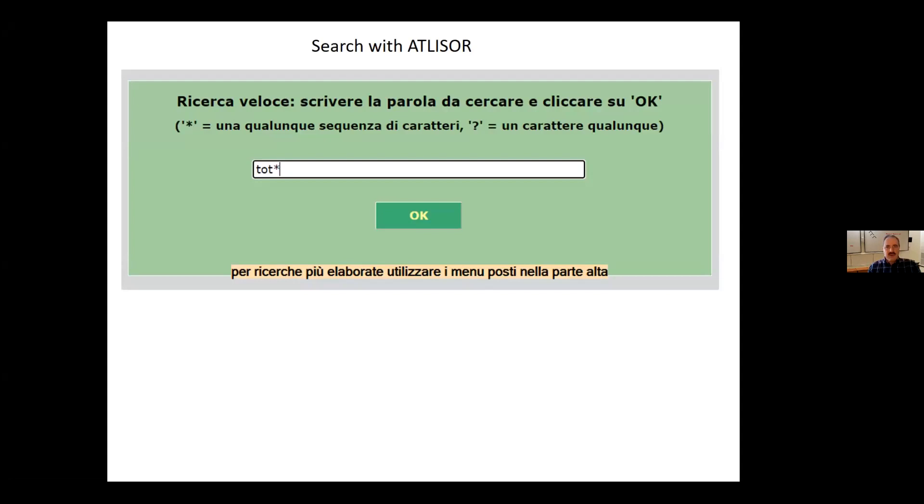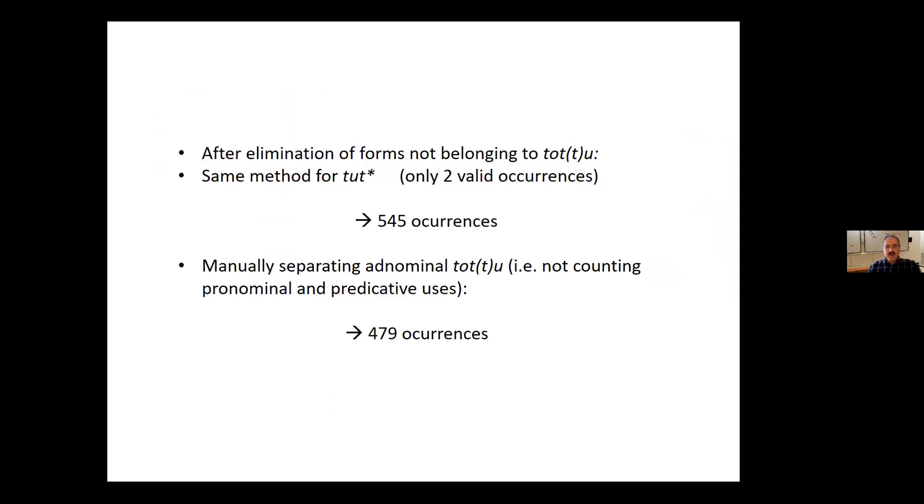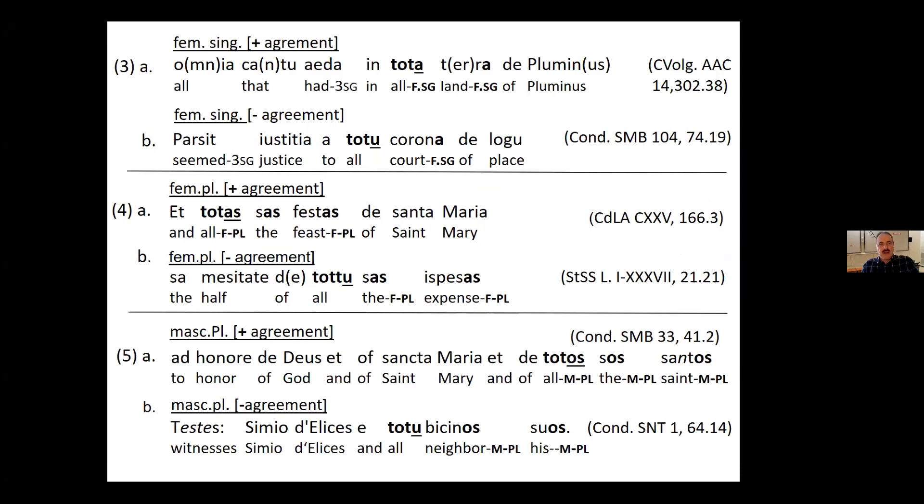Now the corpus study. So I did this search with Atlisor and got lots of findings, and then I eliminated things that are not corresponding to TOTTO. And then I manually separated adnominal TOTTO. So not counting pronominal and predicative uses, because this is what I wanted to investigate and came up with 479 occurrences.